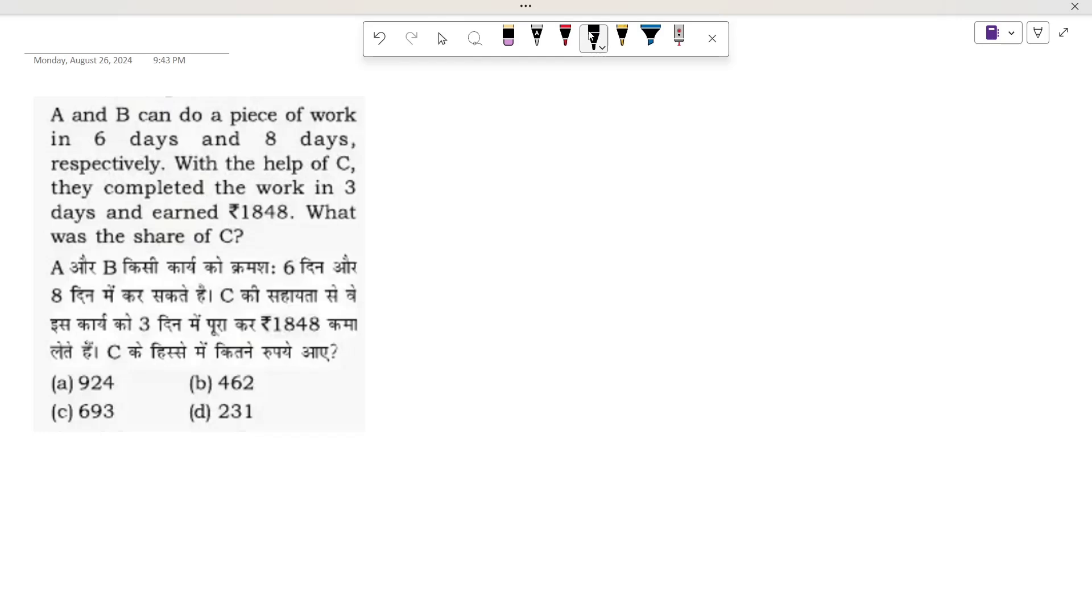What is given in this question? A and B can do a piece of work in 6 and 8 days respectively. With the help of C, they completed the work in 3 days and earned ₹1848. What is the share of C?